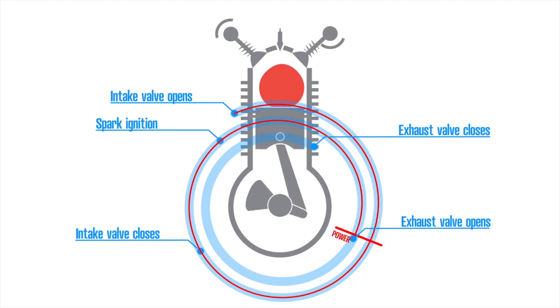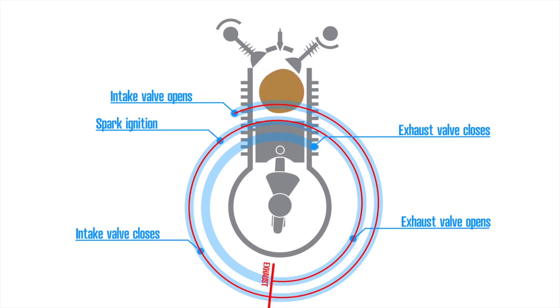The exhaust valve opens before the exhaust cycle begins. The pressure is still high in the cylinder so the burnt gases escape. This means that the piston has less work to do pushing out the gases.